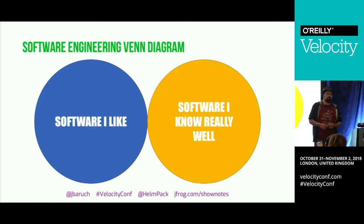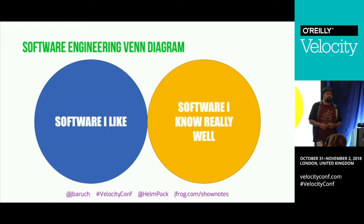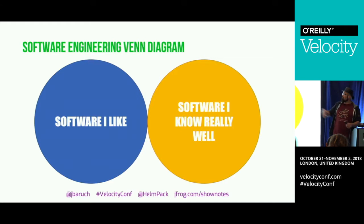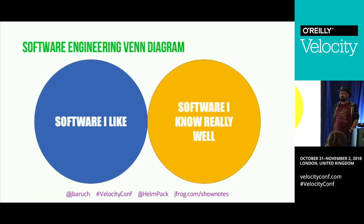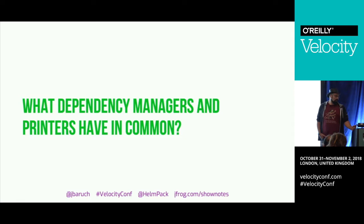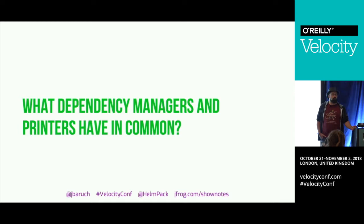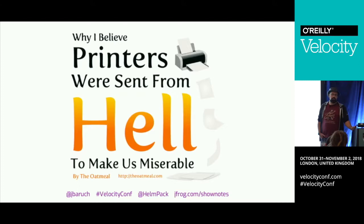Let's talk about the problems of Helm and how we can solve them. Out of all pieces of software engineering, dependency managers or package managers are the worst. What the Oatmeal said about printers is also completely applicable for package managers — they're sent from hell to make us miserable.